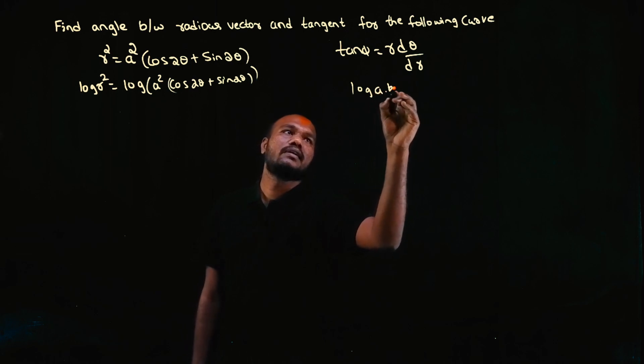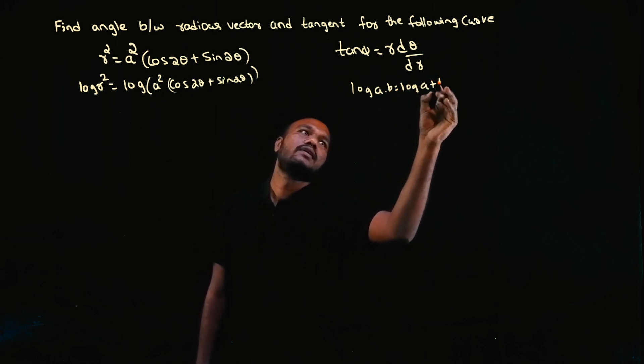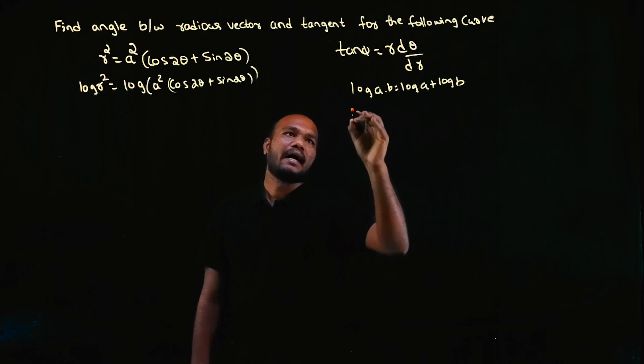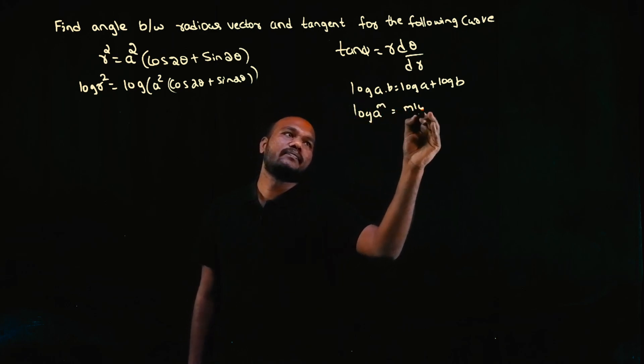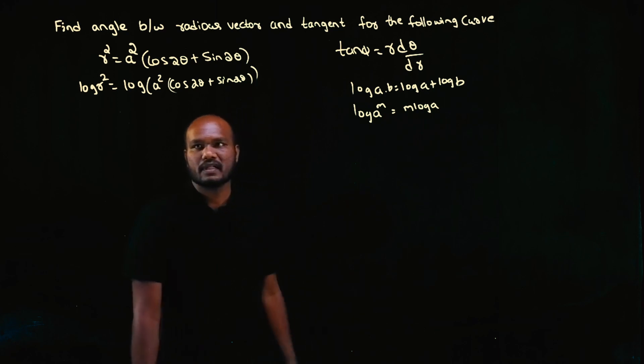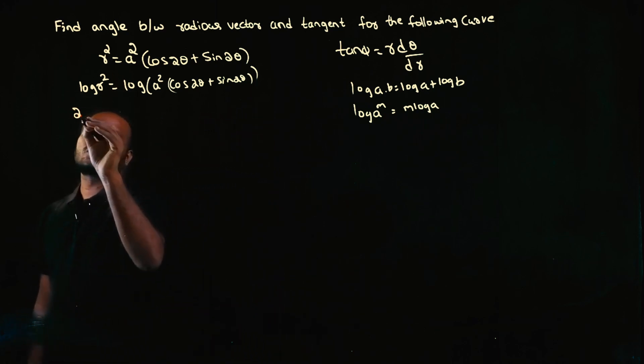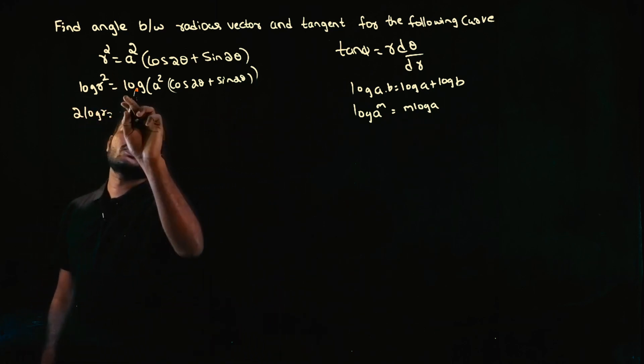Now, log a times b is log a plus log b, and log a^m is m log a. So we get 2 log r equals log a² plus log of cos2θ plus sin2θ.